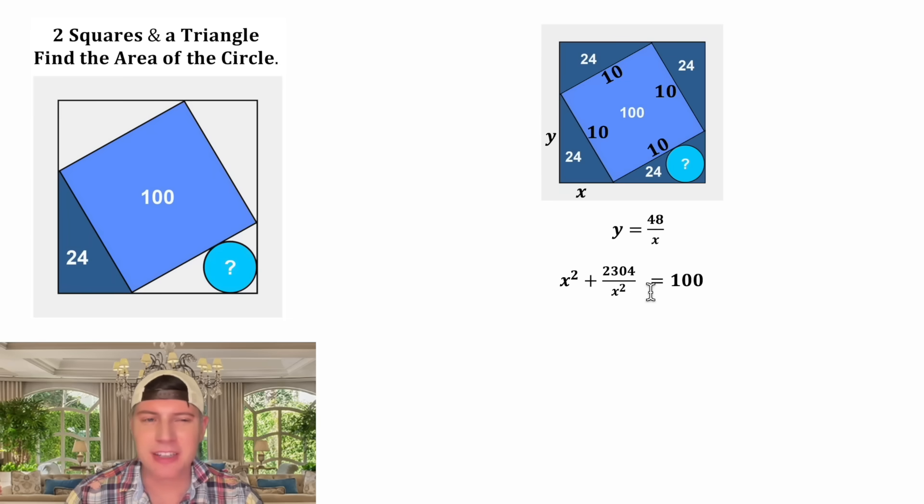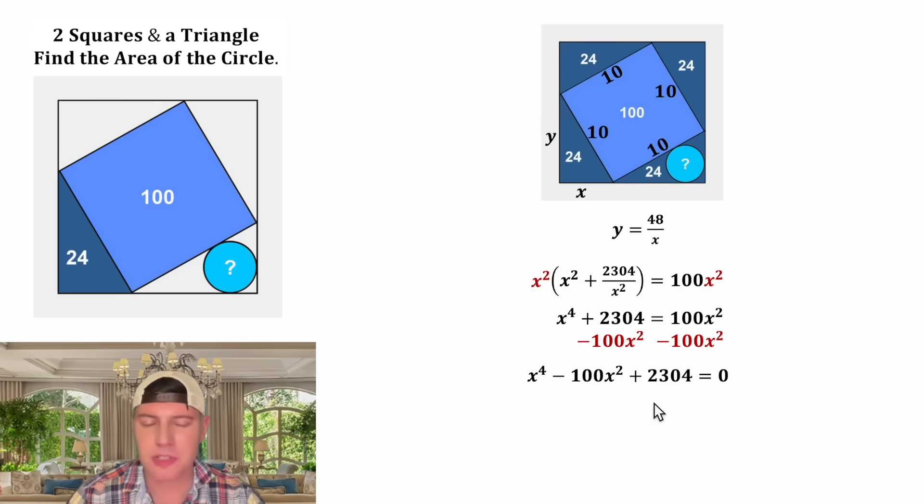So for the next step I don't really like fractions, so let's get rid of this denominator. We can multiply both sides of the equation by x squared. On the left-hand side this x squared will distribute to both of these terms giving us x to the fourth plus 2,304. And on the right-hand side we have 100 x squared. Let's subtract 100 x squared from both sides and we end up with x to the fourth minus 100 x squared plus 2,304 equals zero.